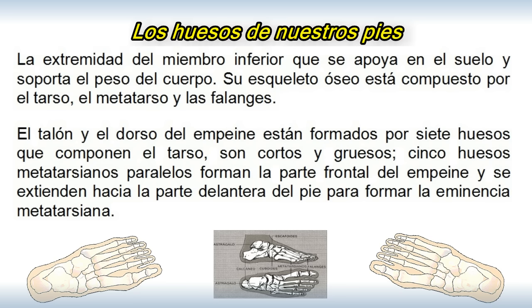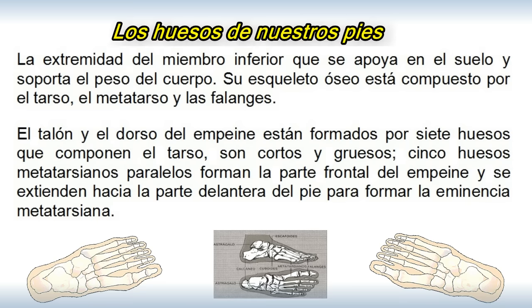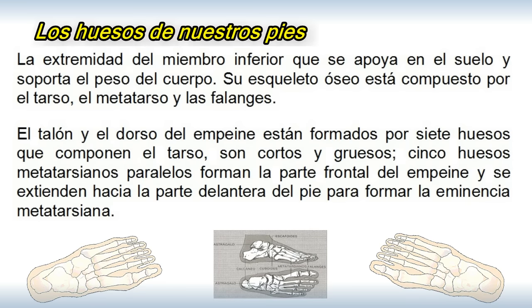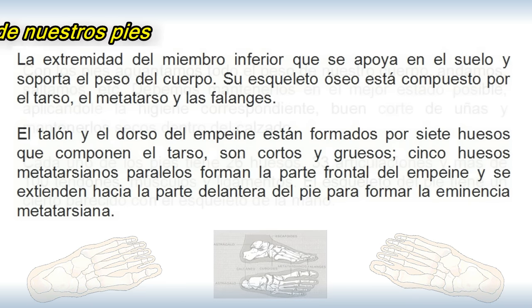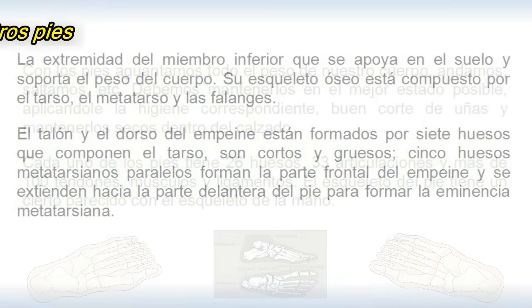El talón y el dorso del empeine están formados por siete huesos que componen el tarso, son cortos y gruesos. Cinco huesos metatarsianos paralelos forman la parte frontal del empeine y se extienden hacia la parte delantera del pie para formar la eminencia metatarsiana.